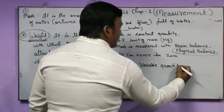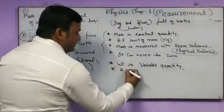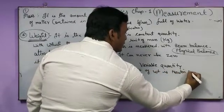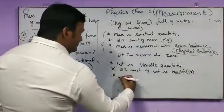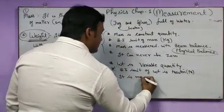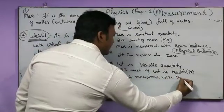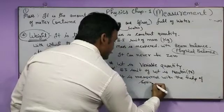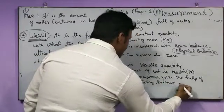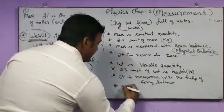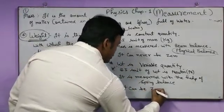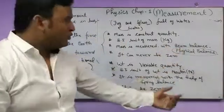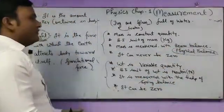We consider the gravitational force which acts on the body. This is the major difference between mass and weight. Now with the help of key points: weight is a variable quantity. As a unit of weight is Newton. It is measured with the help of spring balance, and lastly it can be zero because it depends on gravitational force and gravitational force changes from place to place.